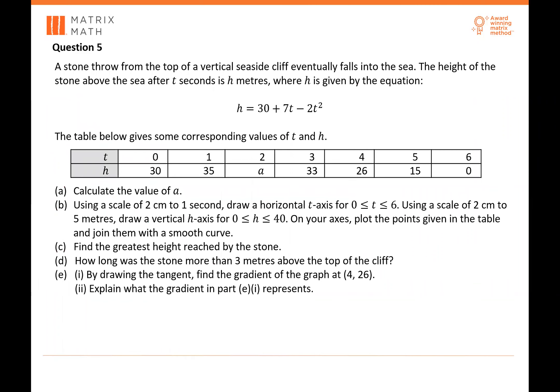Question 5: a stone thrown from the top of a vertical seaside cliff eventually falls into the sea. The height of the stone above the sea after t seconds is h meters, where h equals 30 plus 7t minus 2t². A table gives corresponding values of t and h. For part A, calculate the value of a by substituting t equals 2 into the equation. You should get a equals 36.